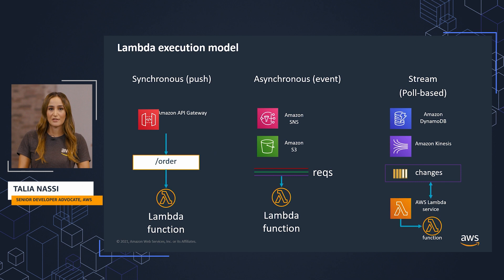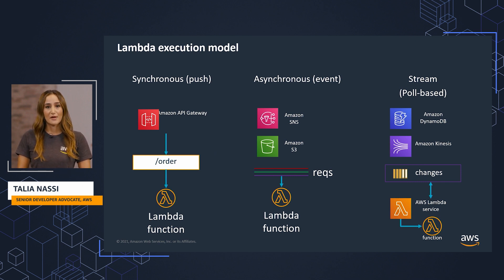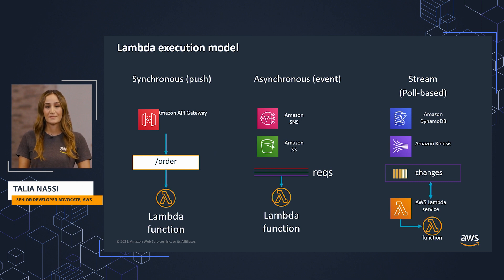Lambda has three execution models: synchronous, asynchronous, and stream. In a synchronous model, you have commands — you're telling a service to do something: go place this order, go do this thing. It's command-driven. Lambda is made to execute and returns a response once the code has finished executing.